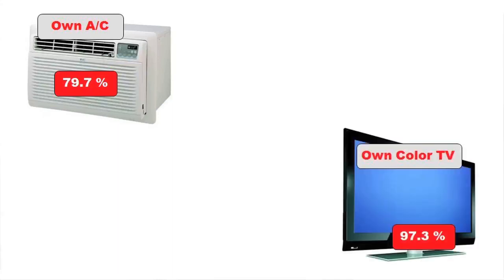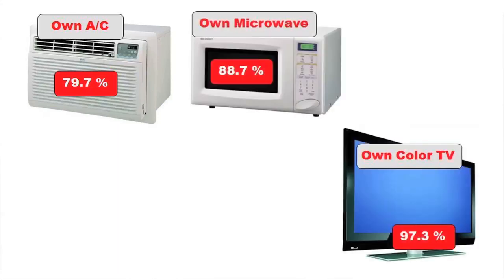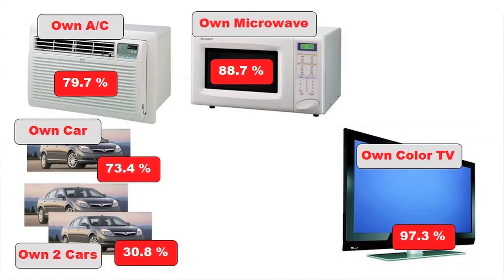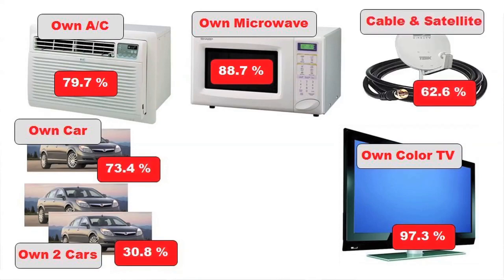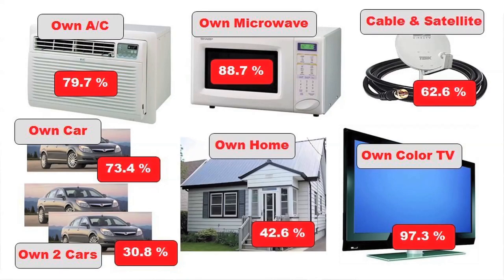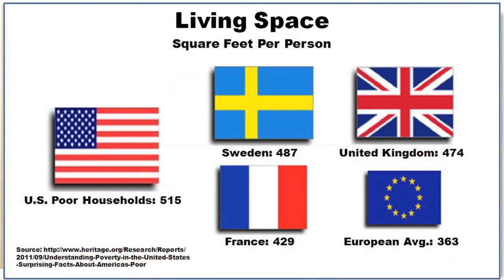As Robert Rector of the Heritage Foundation has documented, poor people today have access to consumer goods that used to be considered luxuries. In fact, the average poor person in America has more living space than the average European.